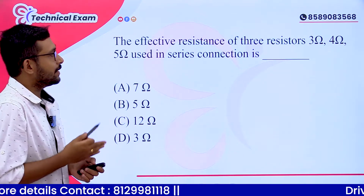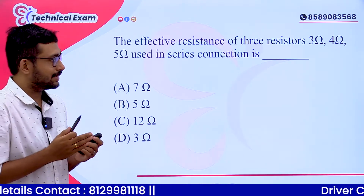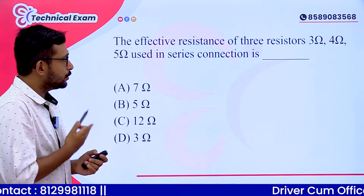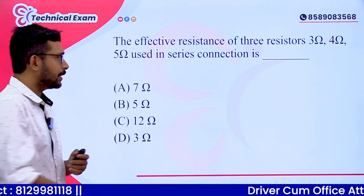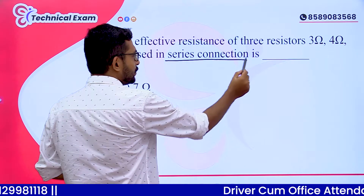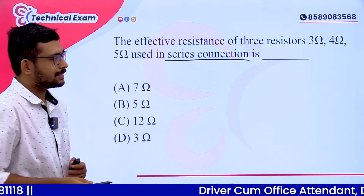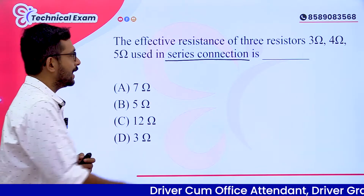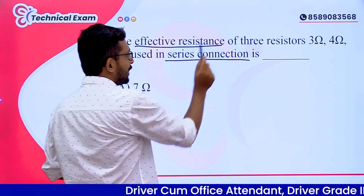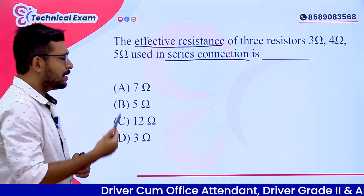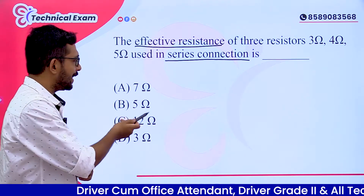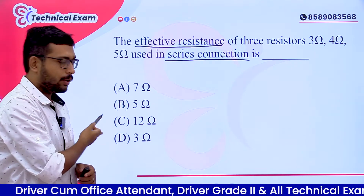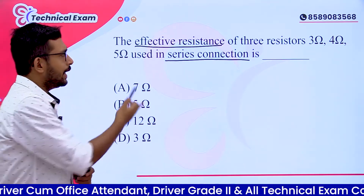The effective resistance of 3 resistors — 3 ohm, 4 ohm, and 5 ohm — used in series connection. Options are: A. 7 ohm, B. 5 ohm, C. 12 ohm, D. 3 ohm.